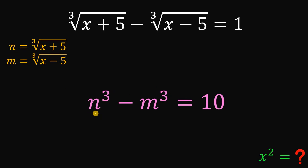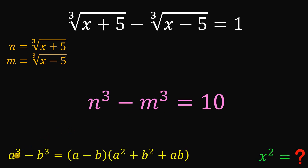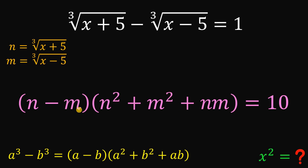We will focus on this result. What do we know about n cubed minus m cubed? We can factor this using the identity: a cubed minus b cubed equals (a minus b)(a squared plus b squared plus ab). So n cubed minus m cubed factors as (n minus m)(n squared plus m squared plus nm), and it must equal 10.